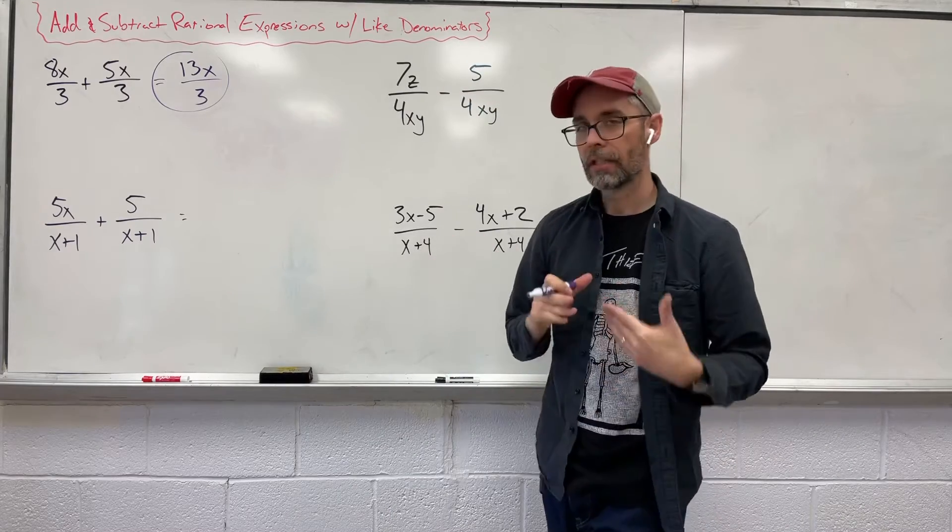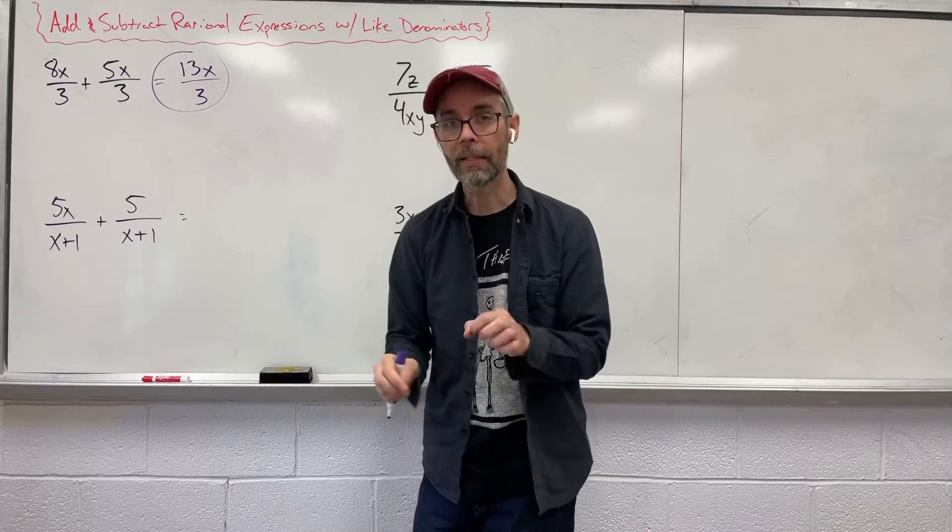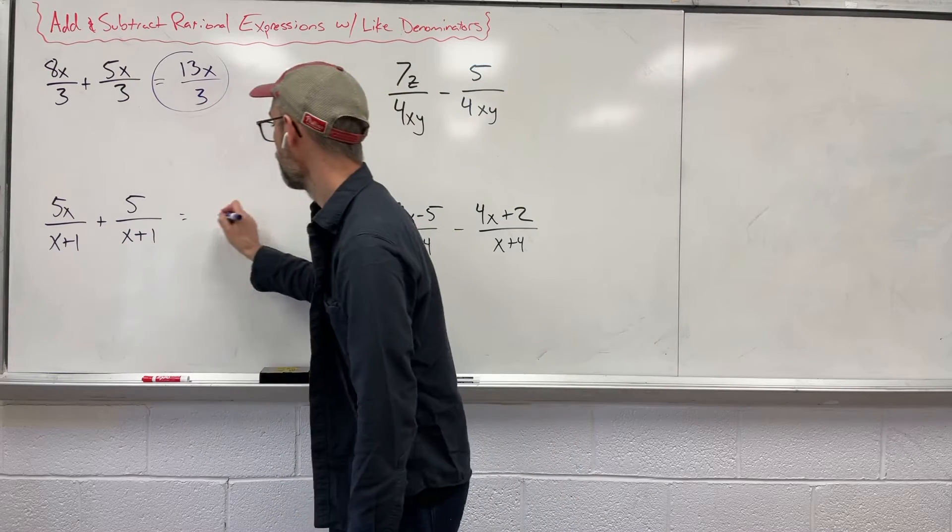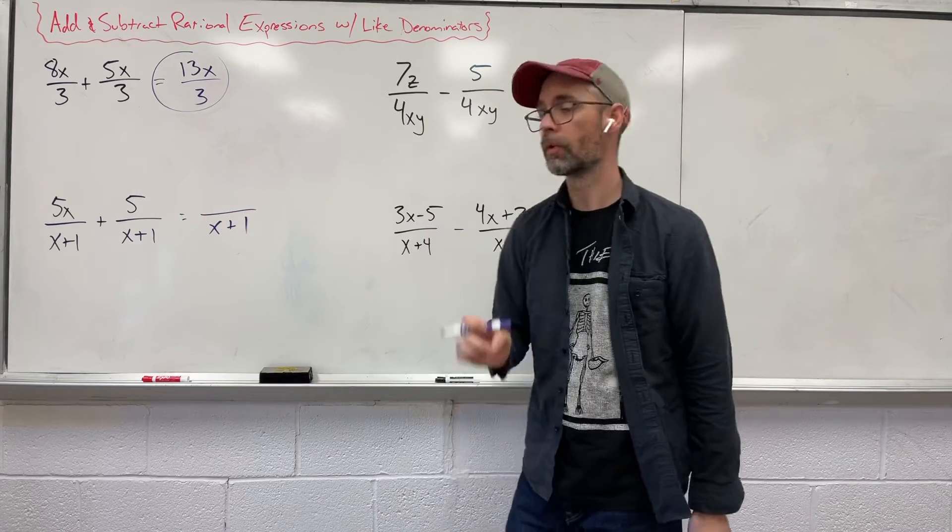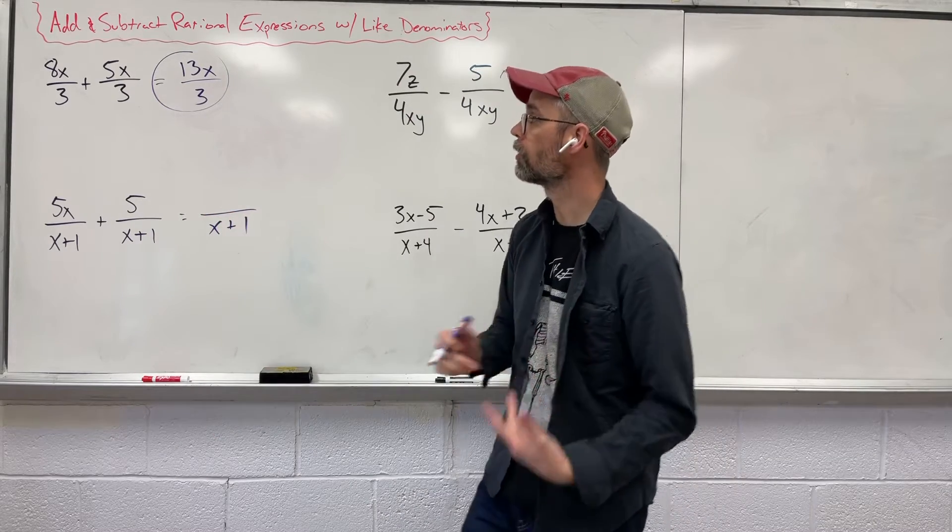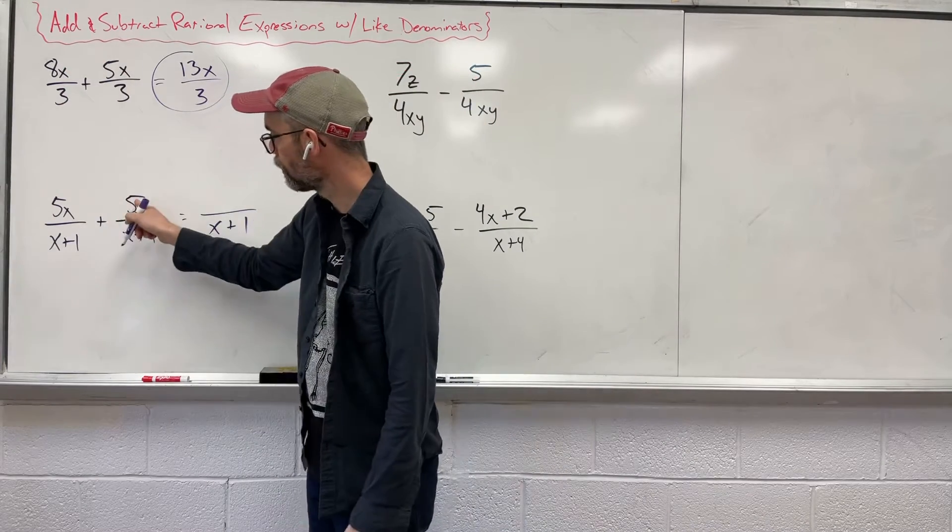Underneath that, our denominator gets a little more complicated. It's now a binomial, x plus one, x plus one, but they are the same and that's what we want. So we keep the denominator and we still want to follow along with those same rules. So up here, we added the 8x and the 5x, we combine them. I want to do the same here, but I got a problem.